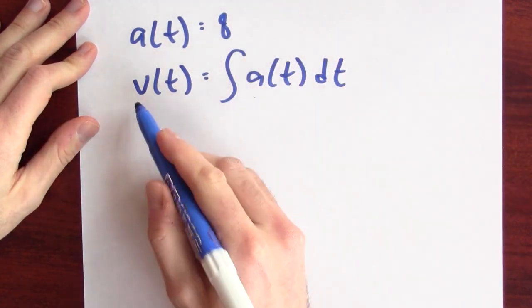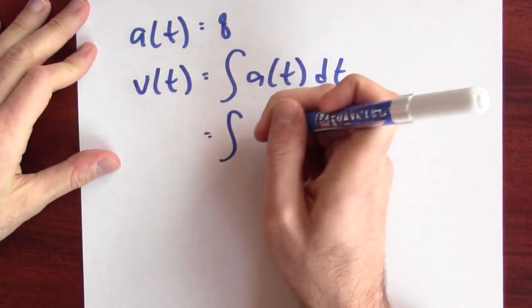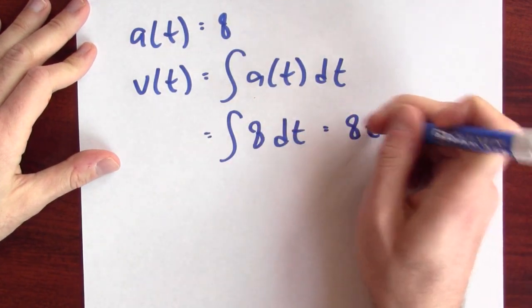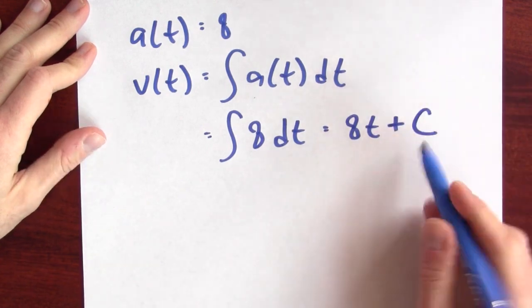If I anti-differentiate acceleration, I'm going to get velocity. It means I'm anti-differentiating 8. Well, what anti-differentiates to 8? Well, 8t plus some constant c.